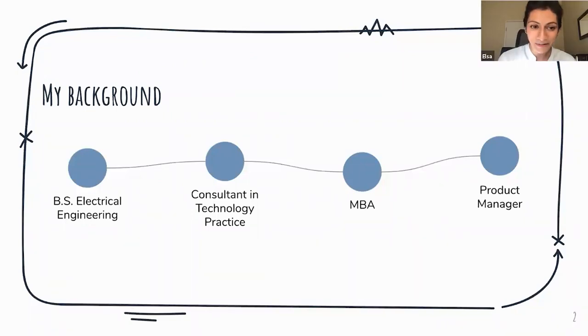So a little bit about my background. I went to school for a degree in electrical engineering and coming out of school, I joined consulting. I was at Deloitte Consulting in the technology practice and spent about five years there. I loved a lot of aspects of consulting, but one itch that I had was to get a little closer to the end user. And so I decided to pursue my MBA. And right after school, I joined Google as a product manager and have been there for about four years.